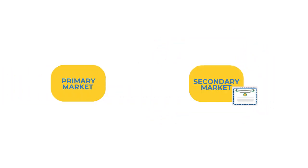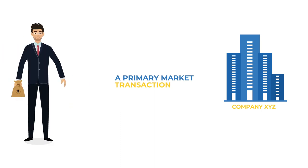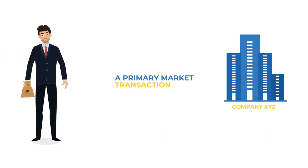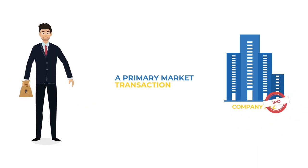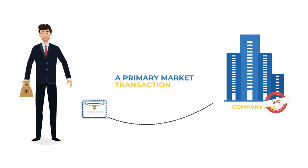In the stock market, stocks come to the primary market first. In the primary market, the buyers purchase stocks directly from the stock issuer. For example, if a company issues fresh stocks in an IPO and you invest by buying shares, that is a primary market transaction.